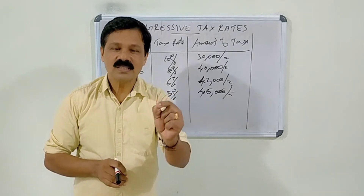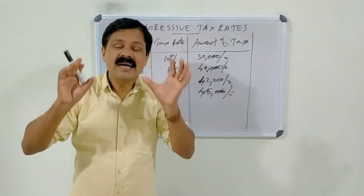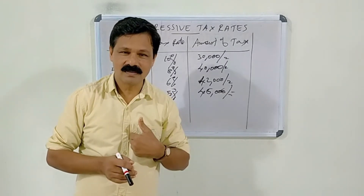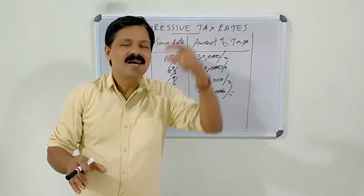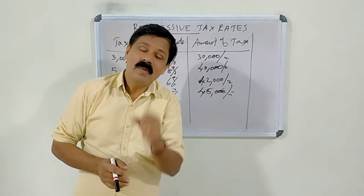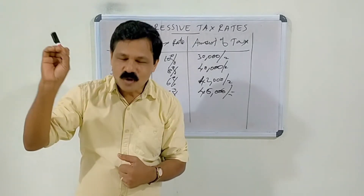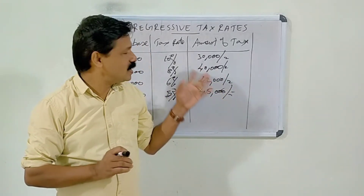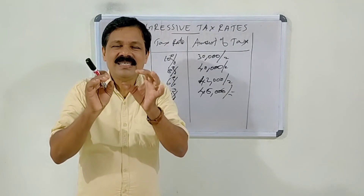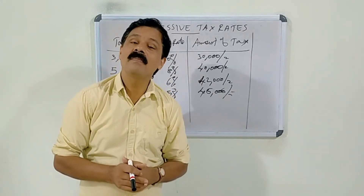If the government follows the principle of progressive system of taxation, the government may be able to mobilize and collect the maximum amount of money from the people by way of taxes. Progressive tax rates mean a schedule in which, as income increases, the rate of taxation charged will also increase. The government can collect maximum amount of money from the richer sections — those who possess higher income — and the progressive system of taxation serves as a best weapon to reduce the existing inequalities in the distribution of income and wealth inside the economic system.